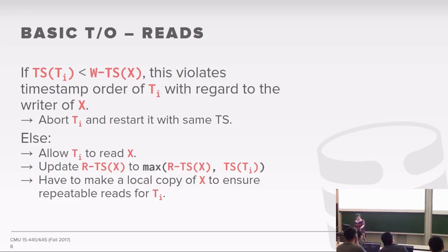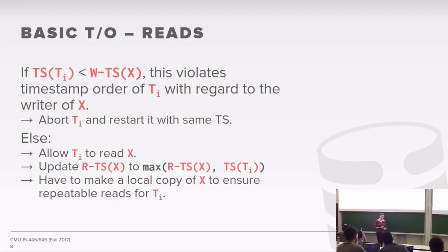A student asks: if you're using a lower isolation level, can you skip the private workspace copy? Yes — if you're running at read committed or below, you don't need it. You only need the private workspace copy to maintain serializable isolation.